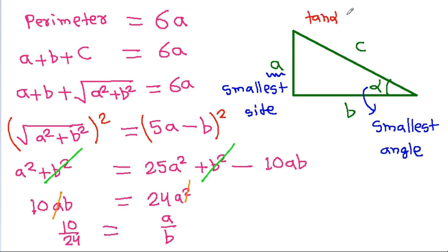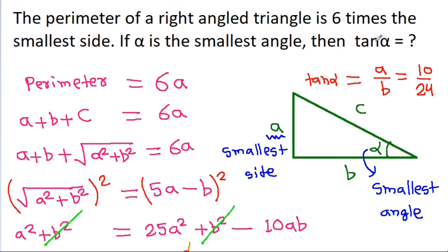tan α equals perpendicular over base, which is a/b. Since a/b = 10/24, we get tan α = 5/12.